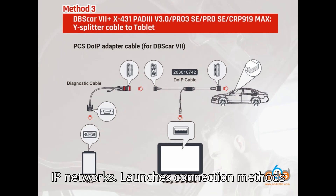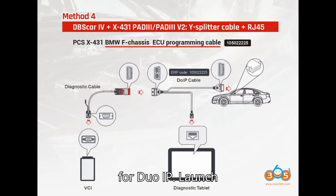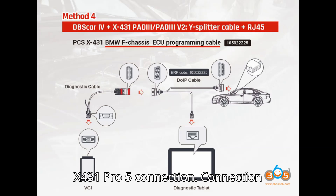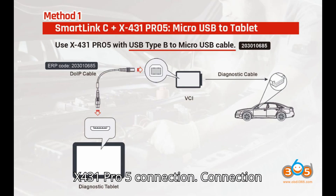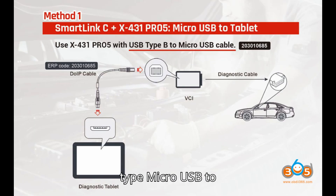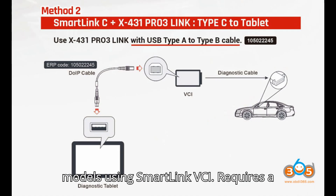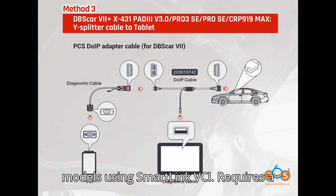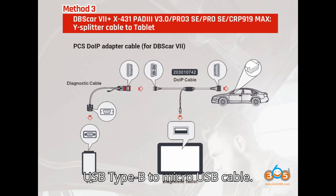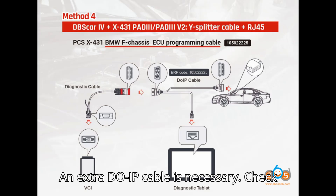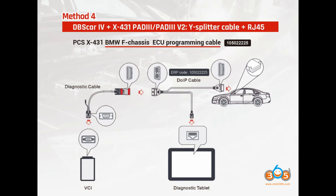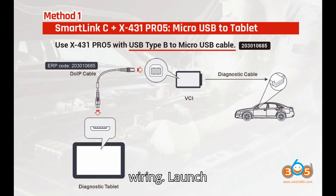Launch's connection methods for DoIP. Method 1: Launch X431 Pro 5 connection. Connection type: Micro USB to tablet. Compatible with older Pro 5 models using SmartLink VCI. Requires a USB Type B to Micro USB cable. An extra DoIP cable is necessary. Check the connection diagram for specific wiring.